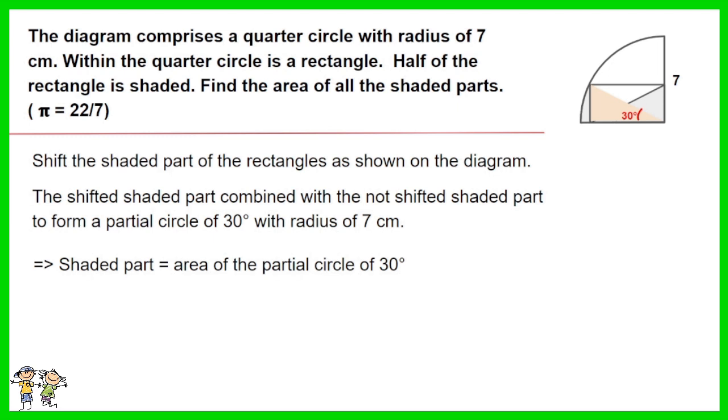Thus shaded part equals area of the partial circle of 30 degrees. Work out the equation. The answer is 12 and 5 over 6 cm squared.